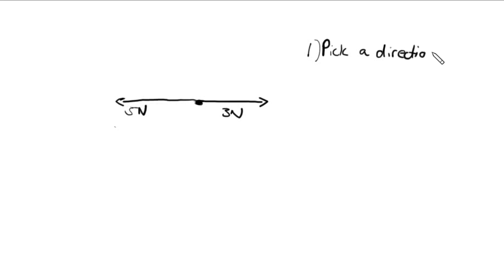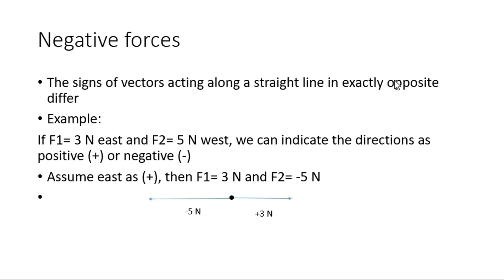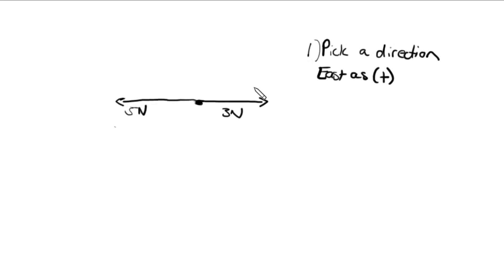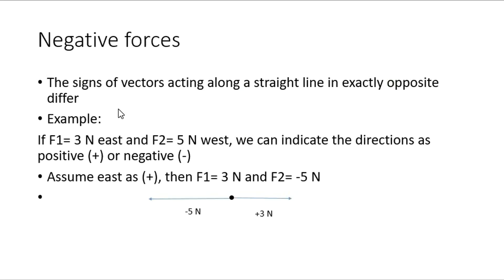Take east as positive; therefore the opposite direction, west, will be negative. In the example, it was plus 3 newtons east and negative 5 newtons to the west. Purely, the signs just indicate the direction of the vector. We cannot get a negative force — it's not that the force itself is negative, but we are indicating the direction of the vectors only when we put signs in front of the values.